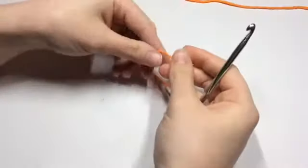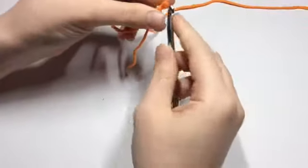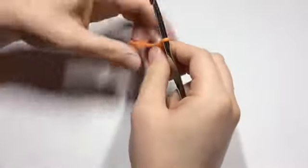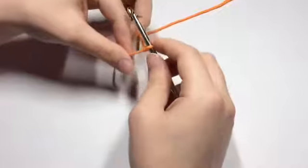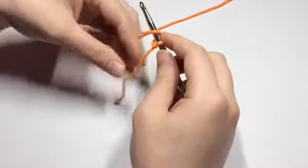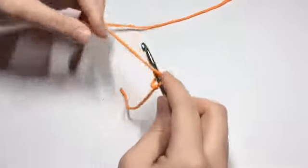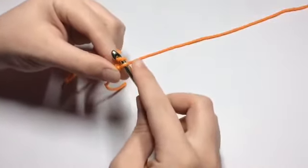So first we're going to start by creating a slip knot and I am using an I hook. But if you wanted to make a bigger one you could use a bigger hook with a chunky yarn if you want to. It's really up to you. But for this tutorial I'm using an I hook and just a simple cotton yarn.